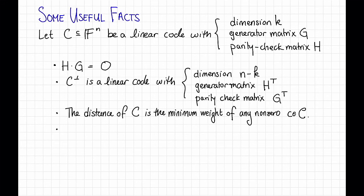And our last fact. The distance of C is the smallest number d, so that the parity check matrix H of C has d linearly dependent columns.